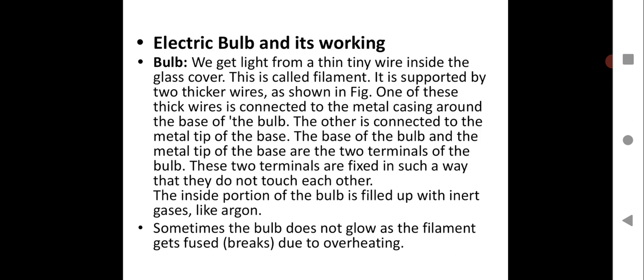One of these thick wires is connected to the metal casing around the base of the bulb, and the other is connected to the metal tip of the base. The base of the bulb and the metal tip are the two terminals of the bulb. These two terminals are fixed in such a way that they do not touch each other. The inside portion of the bulb is filled with inert gases like argon — a non-reactive gas — because you cannot have vacuum or oxygen inside, as that would be hazardous. This is the construction of an electric bulb. Write down all these points in your notebook.